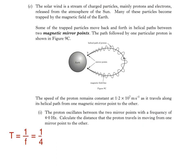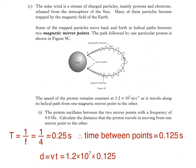So period equals 1 divided by 4 equals 0.25 seconds. Of course, the time taken for the proton to travel from X to the next mirror point will be half this value, which is 0.125 seconds. Now we can calculate distance using d equals vt, which is 1.2 times 10 to the power of 7 times 0.125, which equals 1.5 times 10 to the power of 6 meters.